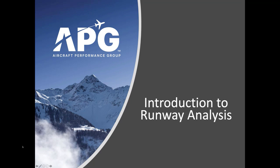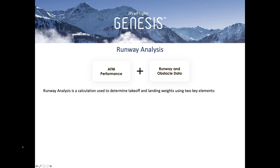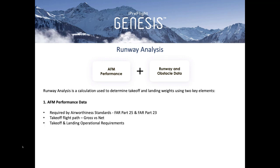How do we perform a runway analysis? Runway analysis is a calculation used to determine takeoff and landing weights using two key elements: your aircraft flight manual performance data required by airworthiness standards FAR Part 25 and FAR Part 23, and data collected during the flight test phase. This includes your takeoff flight path gross versus net — a reduction of what the aircraft is actually flying versus what runway analysis is giving you credit for — as well as your takeoff and landing operational requirements. A recorded version of this webinar will be available to download after the presentation.